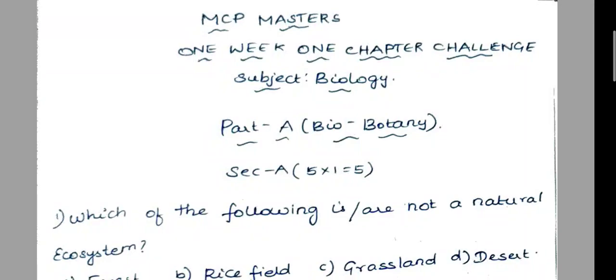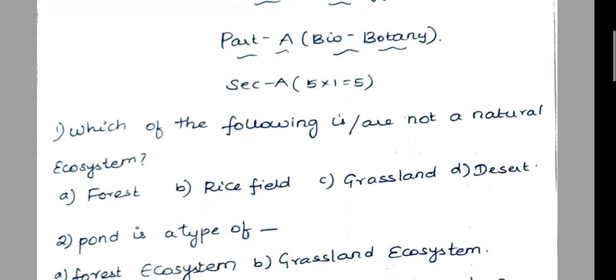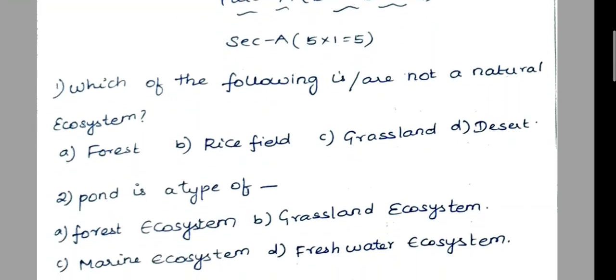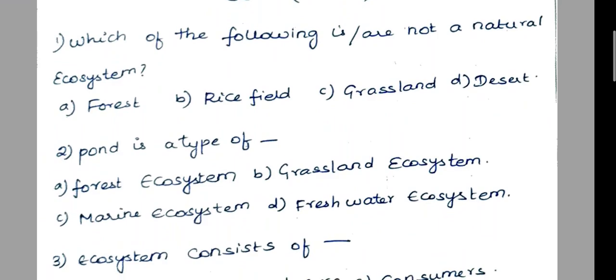Everyone, so in this video, biology second week question. So Part A: Botany 25 marks, Zoology 25 marks. So 5 is one word.